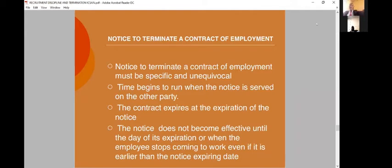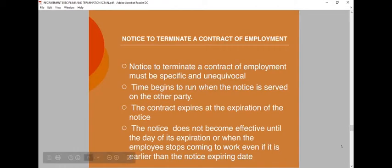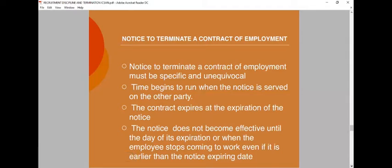The notice must be specific. The time begins to run when the notice is served on the other party. The contract expires at the expiration of the notice. If you are talking about notice of one month, the day you submit the notice, that day is not counted. You give the letter today; the notice starts from tomorrow. The notice does not become effective until the day of its expiration, or when the employee stops coming to work, even if that is earlier than the notice expiry date.